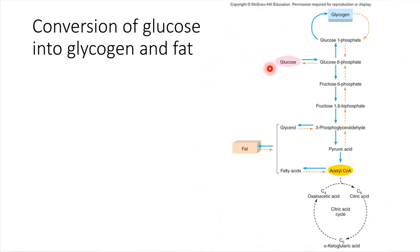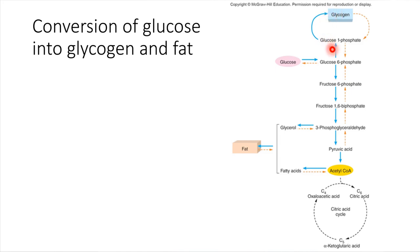We've just learned about the fact that glucose can be taken in by cells, it's phosphorylated, and then the cell can either store that glucose in the form of glycogen, or it can use that glucose to make some energy by sending it off into the citric acid cycle.